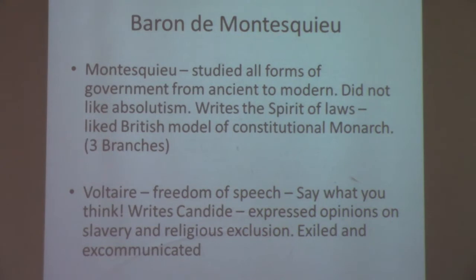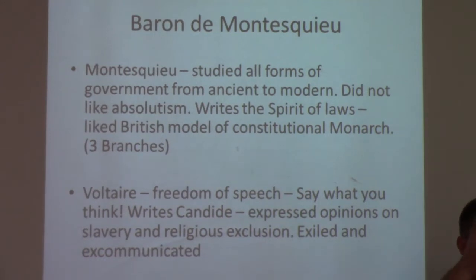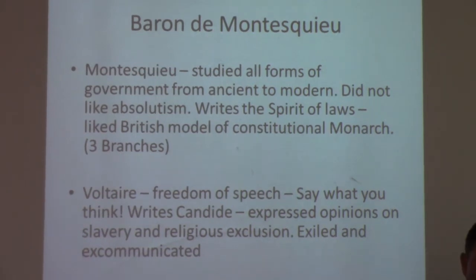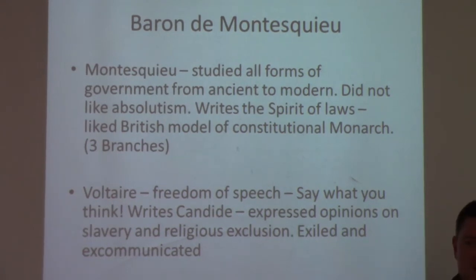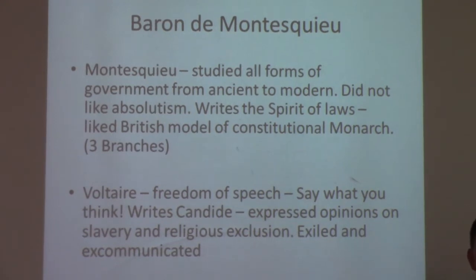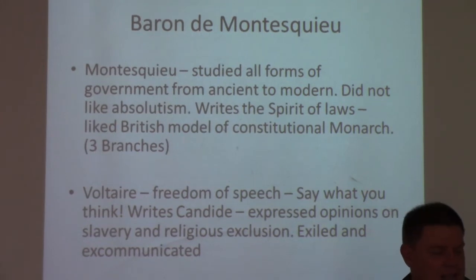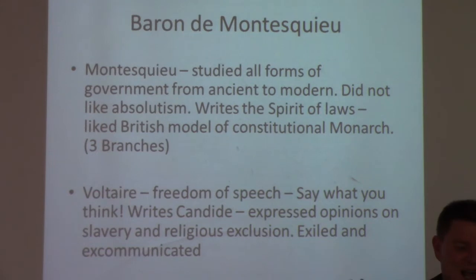Adding on to these two English philosophers is Barron de Montesquieu, a French political thinker. The Baron had studied all forms of government, from ancient to modern — from Egyptian pharaohs to Platonic Greece. Much like John Locke, Montesquieu did not like the idea of an absolute monarch. In his essay The Spirit of the Laws, Montesquieu, a Frenchman, gives credit to the British: their idea of a limited monarchy is exactly what we need.